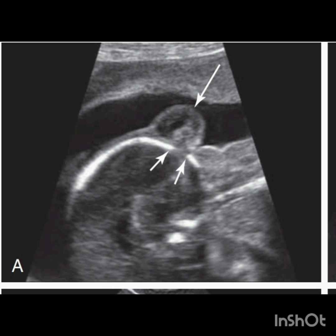A cephalocele is basically a protrusion of intracranial structures through a calvarial defect. It includes both cranial meningocele, which contains only the meninges and cerebrospinal fluid, and encephalocele, which contains the meninges, CSF, and brain tissue.